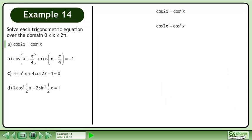We write the original equation. cos2x is equivalent to 2cos²x minus 1. Collect all terms on the left side of the equation. Isolate cos²x by adding 1 to both sides. Take the square root of each side.